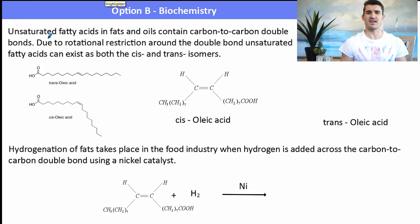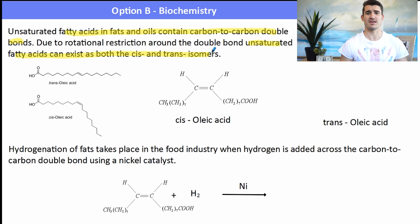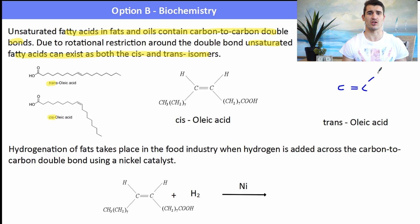Unsaturated fatty acids and oils contain a carbon-to-carbon double bond, and due to that double bond there is restriction, so we have cis and trans isomers. Cis meaning they're on the same side, and trans meaning they're on opposite sides. Trans fatty acids are the long straight-chain ones, where the cis ones usually have a kink in the chain. Trans tend to pack together more tightly so they're usually solid, whereas cis generally tend to be liquids because they can't pack in as tightly.